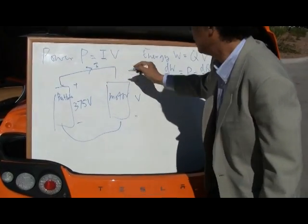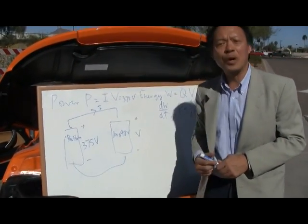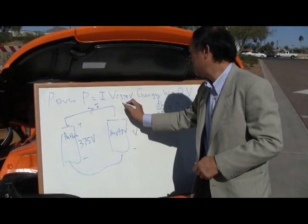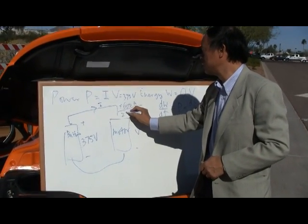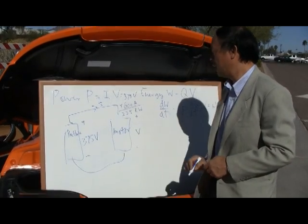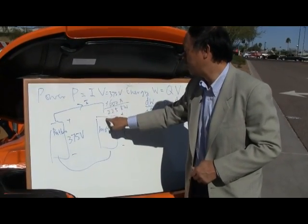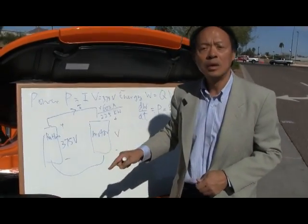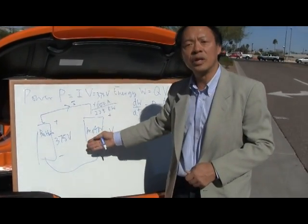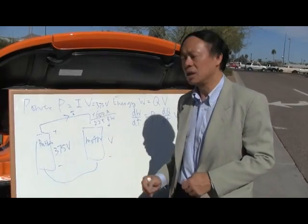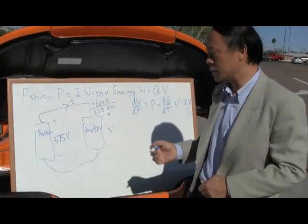Because I goes into the positive terminal of the motor, so if we have a voltage of 375 volts and the current is 600 amperes, if you multiply the two together, you will get a total of 225 kilowatts of power. We call this positive because you have a positive current flowing into the positive terminal of the device. It corresponds to a dissipation of electrical energy, in this case converting electrical energy into kinetic energy of the car.